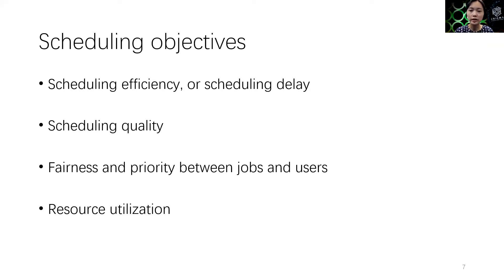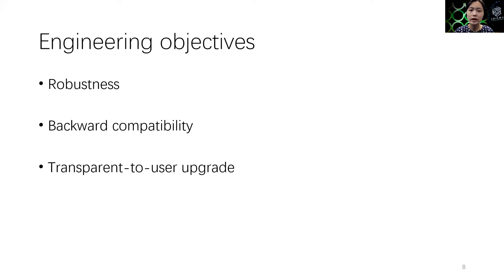These objectives often contradict each other. For example, requiring high scheduling quality may prolong the scheduling delay. Maintaining strict fairness can leave resources unused and thus hurt utilization. Over the years, the complicated logic for balancing these objectives has been programmed into various scheduling strategies. In addition, other cluster components, such as application masters and worker agents, have taken years of collaborative efforts from different teams in Alibaba to become robust. Thus, the new scheduler design should make as few changes to the existing codebase as possible to ensure the entire system's robustness and backward compatibility.